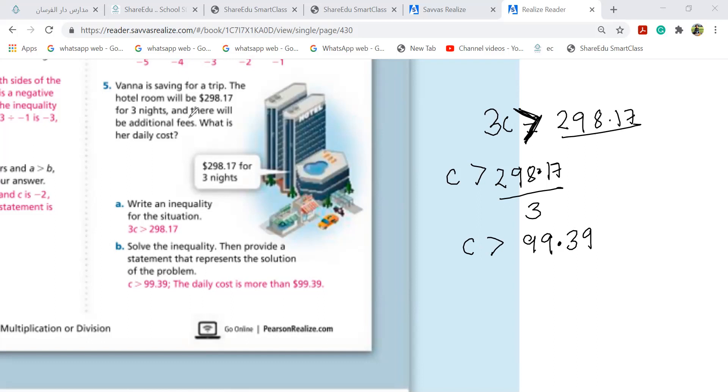See, because they told here, there will be additional fees. That's why I have to write greater than. If in the question, they don't write there will be additional fees, they told you fixed amount. So this becomes an equal sign. Not equal, yeah, greater than or less than.